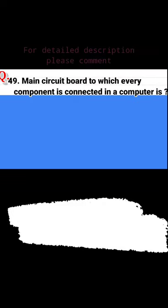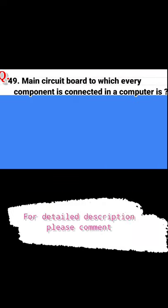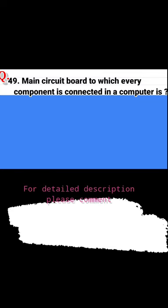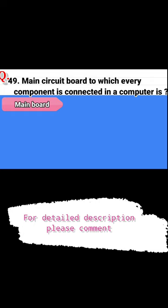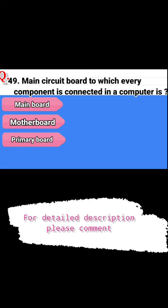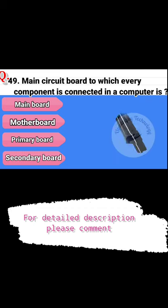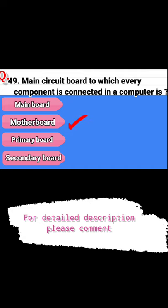Question 49. Main circuit board to which every component is connected in a computer is. The options are: main board, mother board, primary board, and secondary board. The correct answer is mother board.